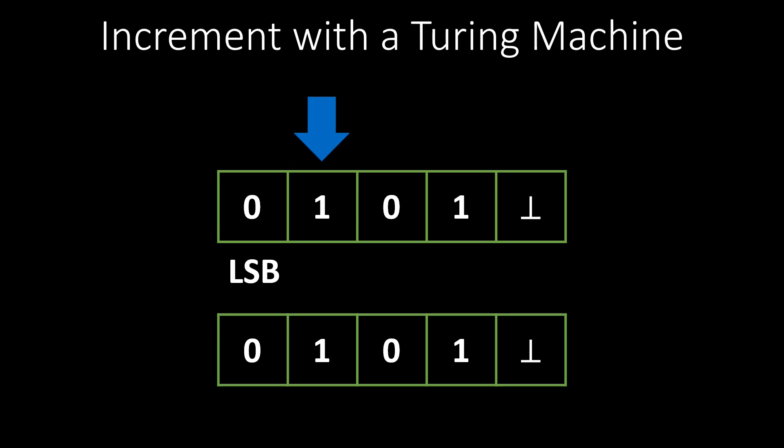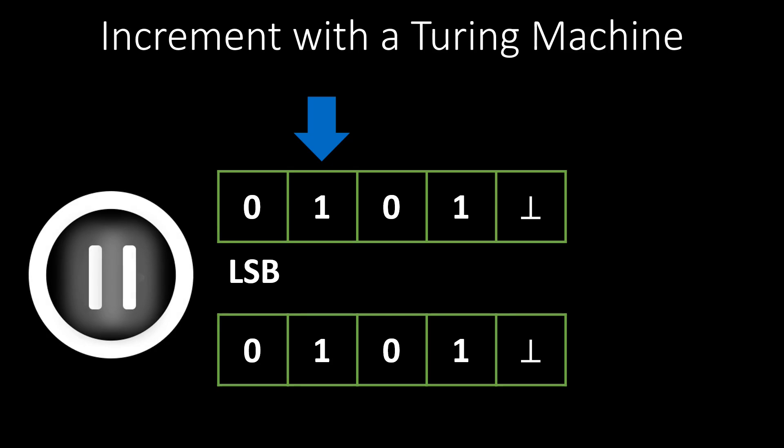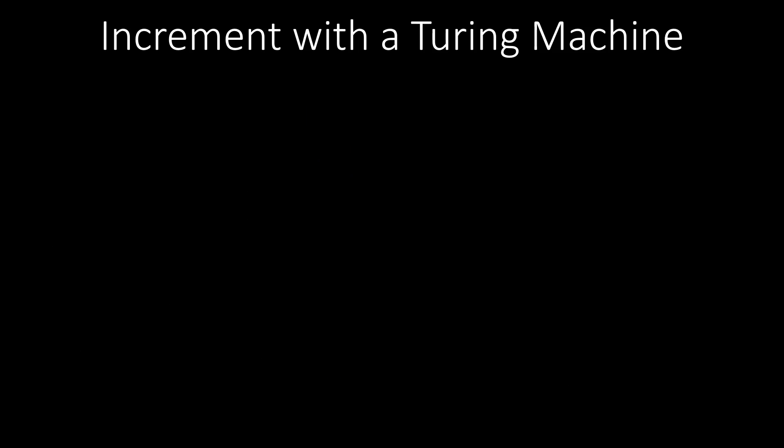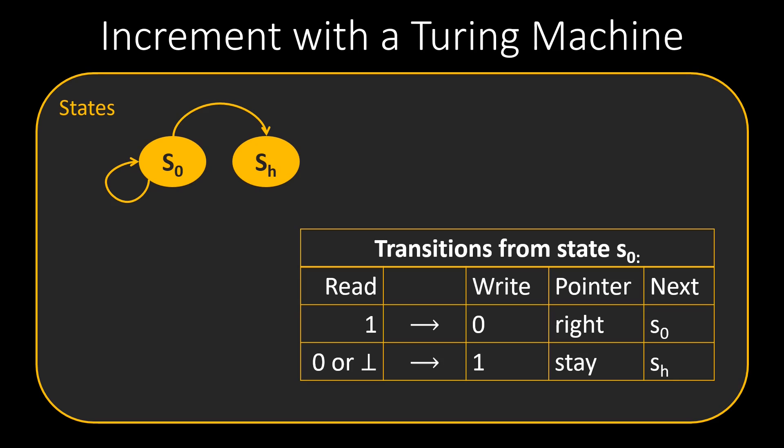How do we need to define our states to perform this increment? Please pause the video to think about it. To increment with a Turing machine, we only need two states, S0 and SH. We start in state S0.